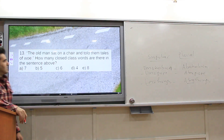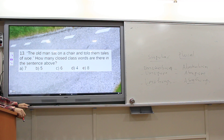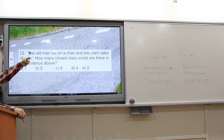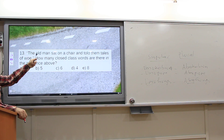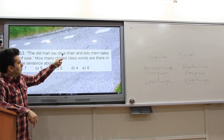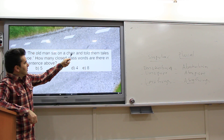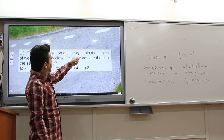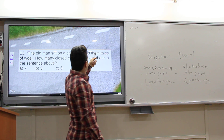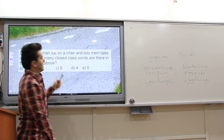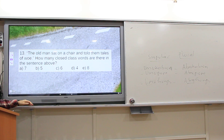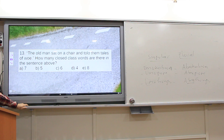The sentence 'The old man sat on a chair and told him, tell us of who' — how many closed class words are there? Counting: approximately five or six closed class words. Let's count again to confirm.